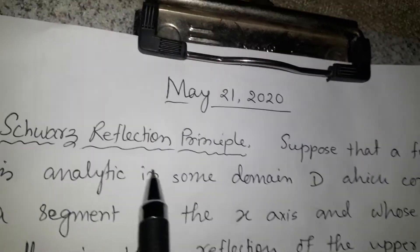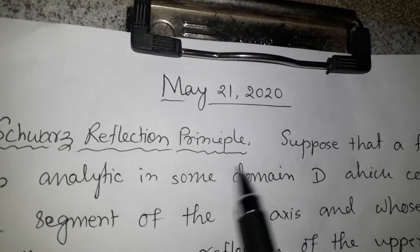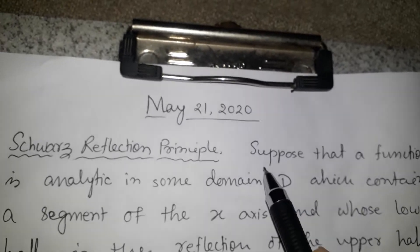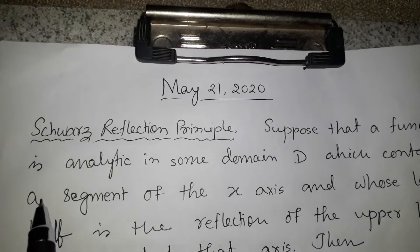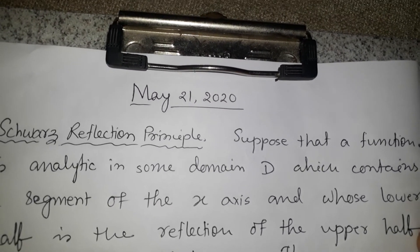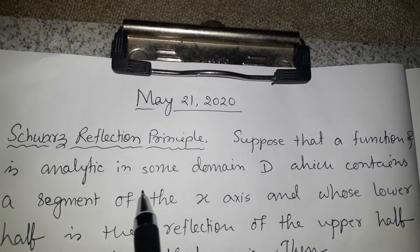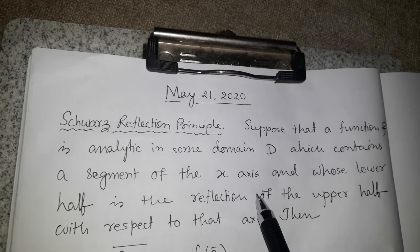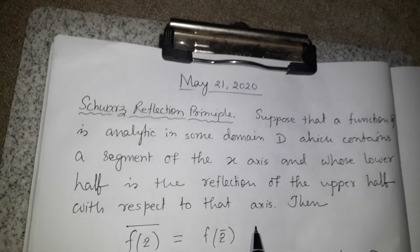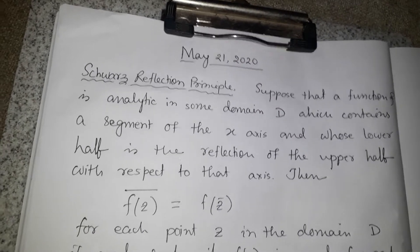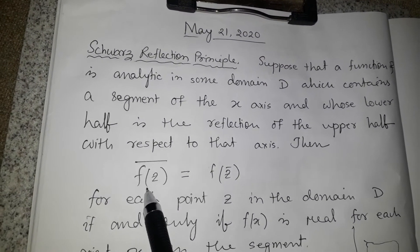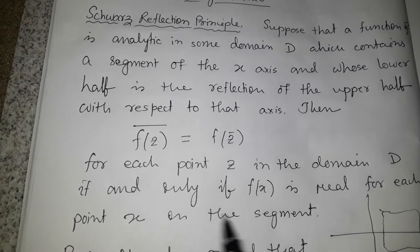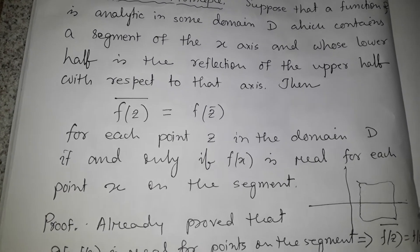We are talking about the Schwarz Reflection Principle theorem. It states: suppose a function f is analytic in some domain D, which contains a line segment of the x-axis and whose lower half is the reflection of the upper half with respect to that axis. Then the conjugate of f(z) equals f of conjugate z for each point z in the domain if and only if f(x) is real for each point x on the line segment.